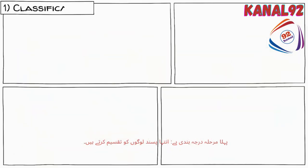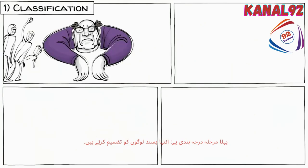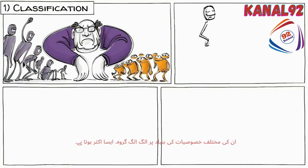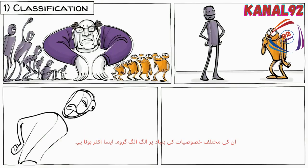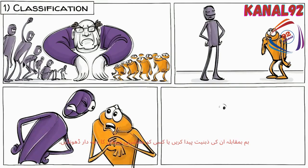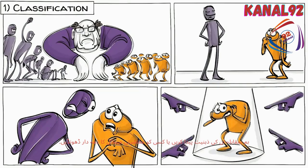Stage 1 is classification. Extremists divide people into separate groups based on their different characteristics. This often happens to create an us-versus-them mentality or to find someone to blame for social problems.